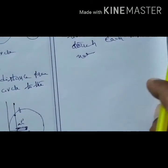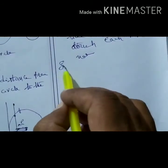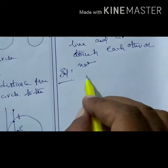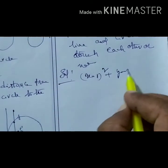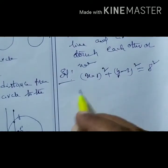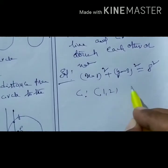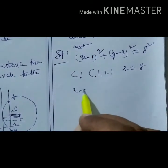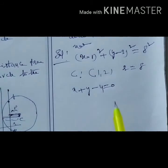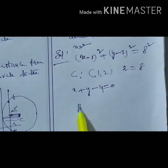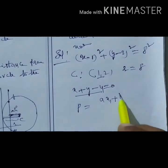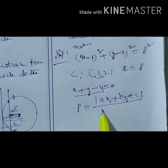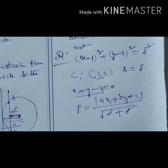For this circle, (x − 1)² + (y − 2)² = 8², the center is (1, 2) and the radius r = 8. The given line is x + y − 4 = 0. Now we find the perpendicular distance p from center (1, 2) to the line using the formula: p = |ax₁ + by₁ + c| / √(a² + b²).